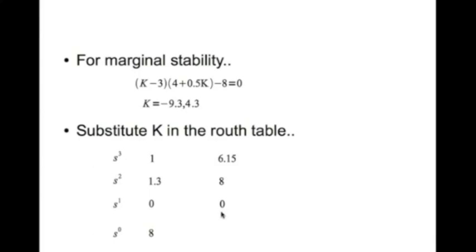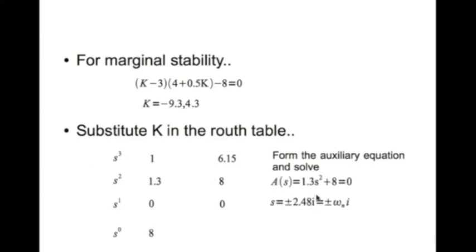Substituting k = 4.3 into the Routh table yields an entire row of zeros. We form the auxiliary equation from the row above: 1.3s² + 8 = 0. Solving gives s = ±2.4i, which equals ±ω_n i — the frequency of oscillation for the undamped system. This confirms the earlier figure where the root locus crossed the imaginary axis at approximately 2.5.